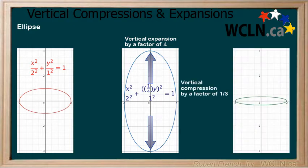Next, we will apply a vertical compression to the original ellipse by a factor of one third. We do this by multiplying y by 3, and we can see how the graph changes accordingly.